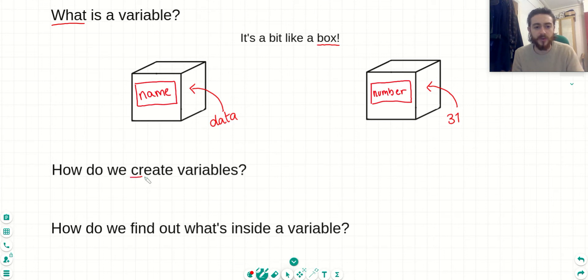So how do we create variables in Python? Well, thankfully, it's very easy. In Python, we just write down the name of the variable we want to make, we put an equal sign, and then we put the data that we want to put inside our variable. So in this example here, it would be number, which is the name of the variable, an equal sign, and the number 31, which is the data we want to store inside of number.